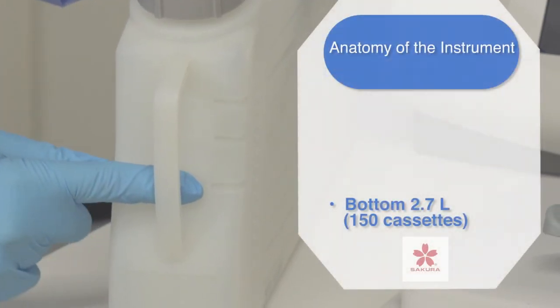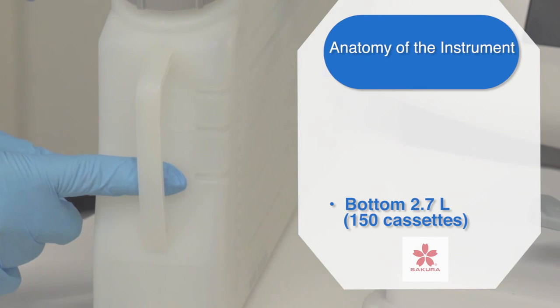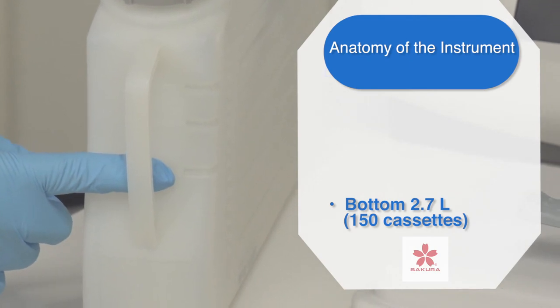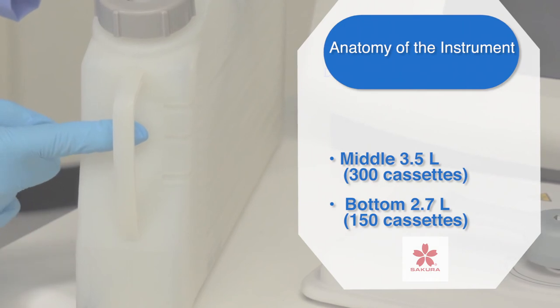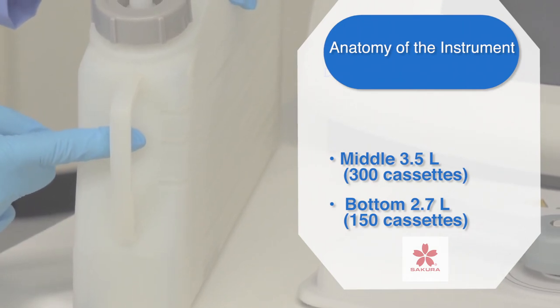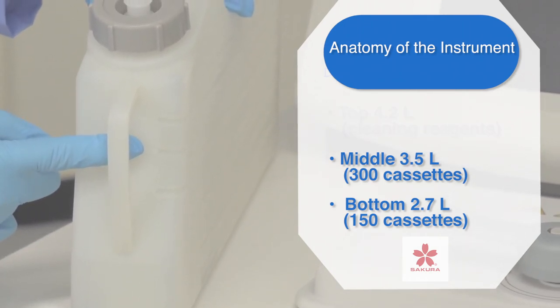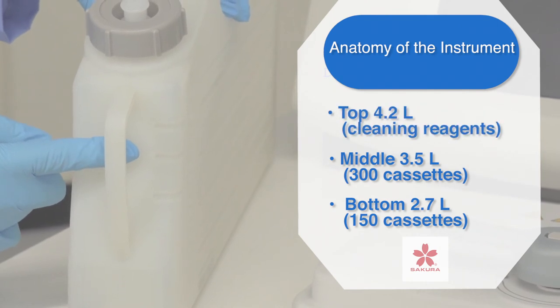The bottom marking is 2.7 liters and is used for processing 150 cassettes or one basket. The next one up is 3.5 liters for 300 cassettes or two baskets of tissue. The top marking should only be used for your cleaning reagents, stations 16 and 17.